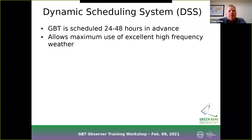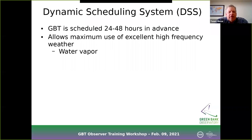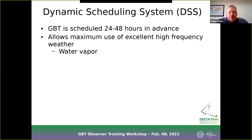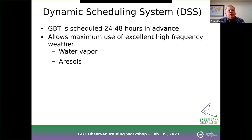This also allows us to maximize use of excellent high-frequency weather when it does come through. Various things matter for the weather concerning GBT observations. Water vapor is one — there's the 22 GHz line of water, and if you have too much water vapor you just can't see through the atmosphere. That line affects a good range of frequencies; it's a really broad line that can affect things 10 to 20 GHz away from that water line.